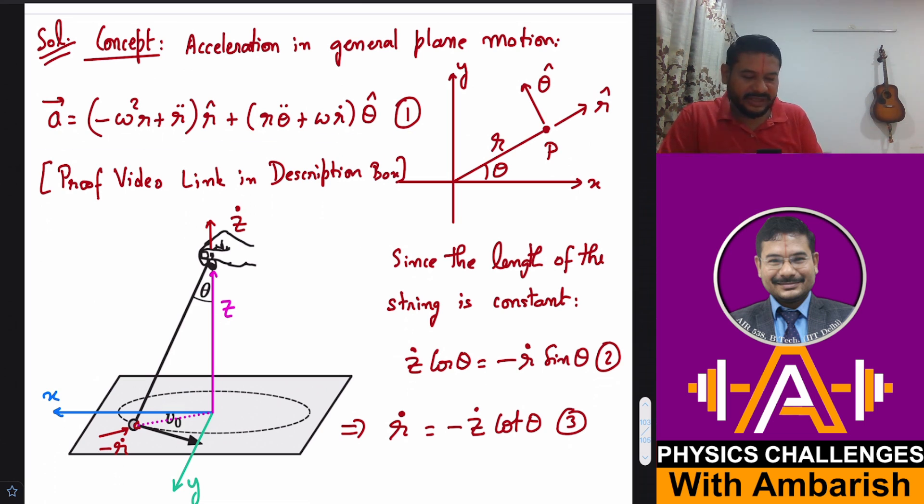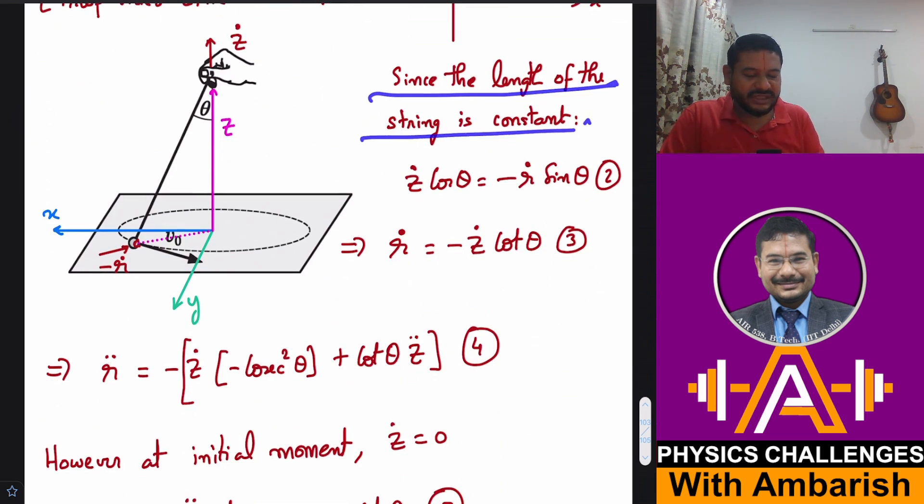So I am not doing the proof here but as I told you the link will be shared. Now let's utilize this concept here. So now the length of the string is constant. What I can say is, see, ż is the vertical velocity of the hand, and ṙ is the rate at which this comes nearer to the center of the circle. So now you know that since the length of the thread is constant, the component of velocity of this ball along the thread should be same as the component of velocity of the hand along the thread.